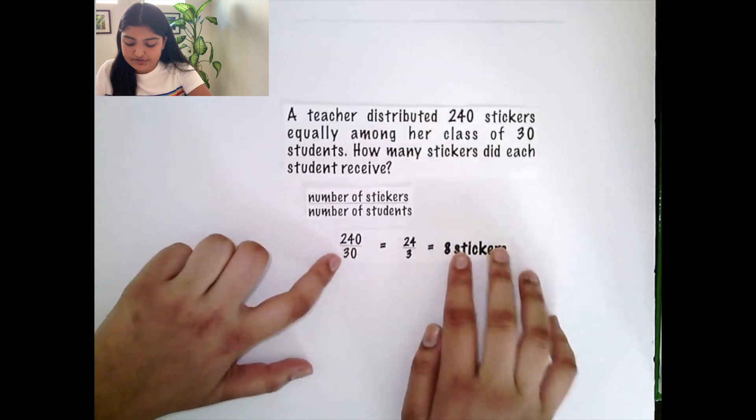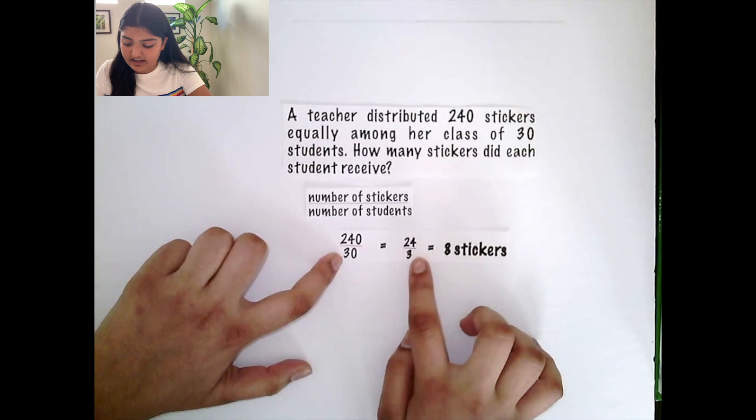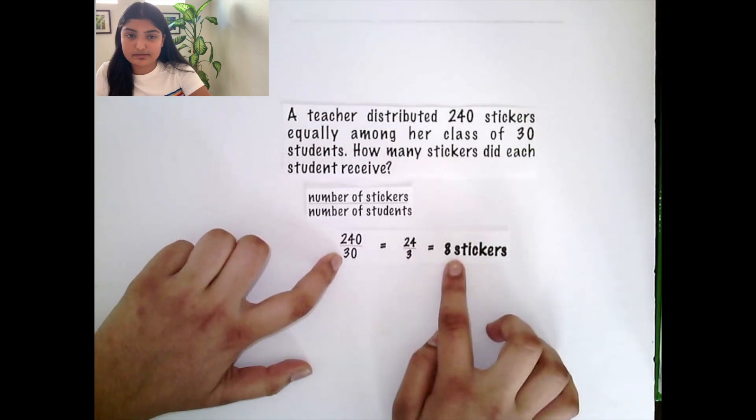There are 240 stickers divided by 30, which you can simplify to 24 over 3, which equals to 8 stickers per student.